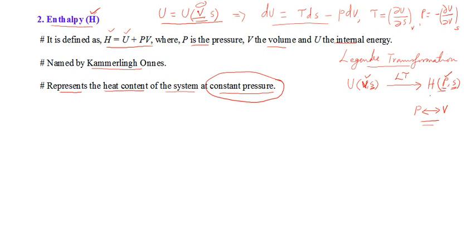Each newly defined thermodynamic potential function is useful in different situations — this is one of the core ideas in thermodynamics. The defining equation — H = U + PV — should be memorized. It is obtained by the Legendre transformation of U. I will explain the Legendre transformation technique in a separate video after we introduce all four thermodynamic potentials.